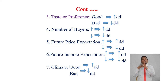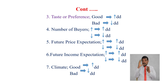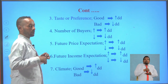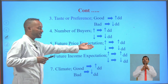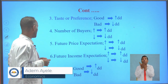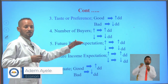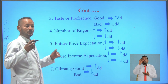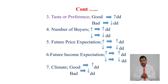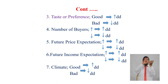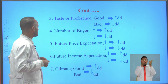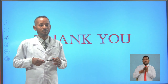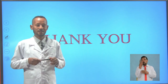Future price expectation is another determinant: if you expect higher prices in the near future, you will buy more now, and if you expect lower prices, you will buy less now — a direct relationship. Similarly, if you expect higher income in the future, demand increases; if you expect lower income, demand declines. Climate is also a determinant — good climate increases demand and bad climate declines demand for a commodity. This concludes the first revision lesson.